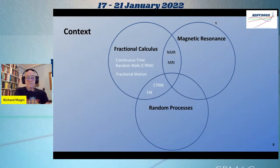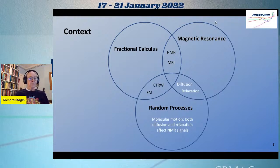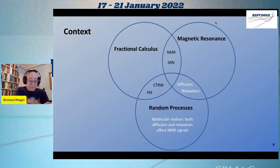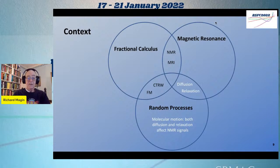Fractional calculus involves different models of generalized non-integer order operators. Most of what I do follows the work of Metzler and Klafter using the continuous time random walk model. Random processes form the basis of thermodynamics — heat is essentially just random motion. In MRI, diffusion and relaxation involve the translational motion of molecules, principally water molecules, which probe intra- and extracellular environments to generate signal contrast.